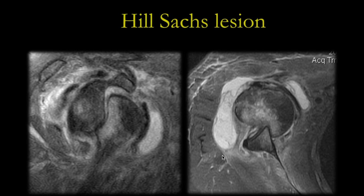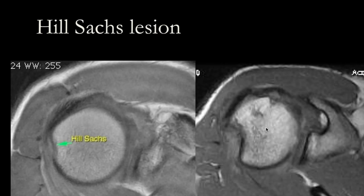This was a patient scanned while the shoulder was in anterior dislocation. As you can see, the shoulder is dislocated anteriorly — the labrum here is torn, and you can see the glenoid impacting into the humeral head. This results in an impaction fracture along the posterior superior humeral head, which is the Hill-Sachs lesion.